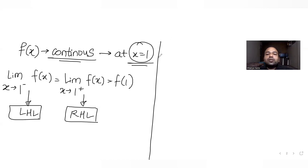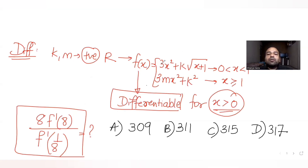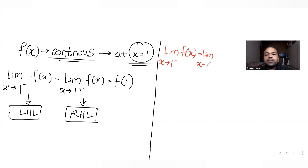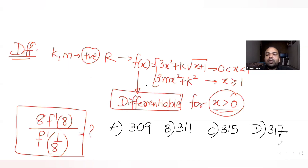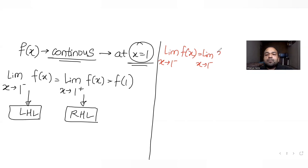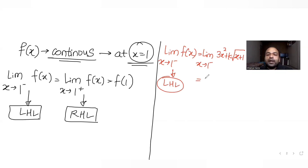For the left hand limit, we use the expression valid for x less than 1: the limit as x tends to 1 minus of 3x squared plus k times root of (x plus 1). Substituting x equal to 1 gives 3 times 1 squared plus k times root of 2, which simplifies to 3 plus k root 2. That is our left hand limit.